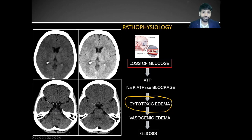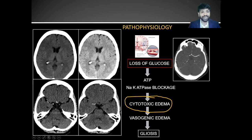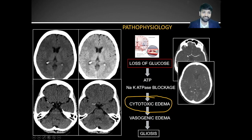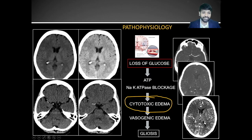In all stroke cases it is always better to combine CT images with angiogram images. In the angiogram images you will be able to appreciate the filling defect wherever the thrombus is present. Trace each artery up to the branch level to see the filling defects in the arteries.